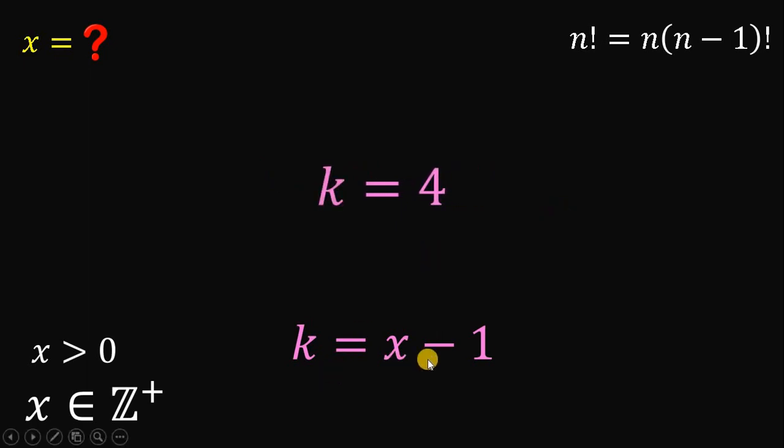And since k is also equivalent to x minus 1, we can equate x minus 1 and 4. Now, to get the value of x, let's add 1 on both sides. Therefore, the value of x must be equal to 5.